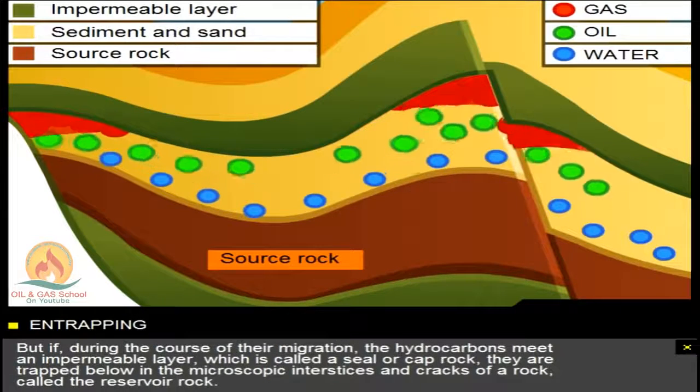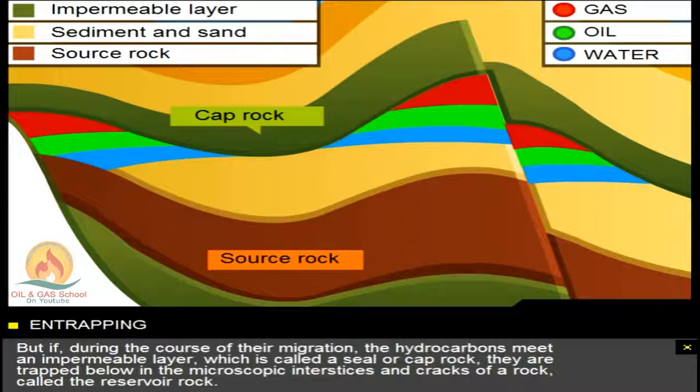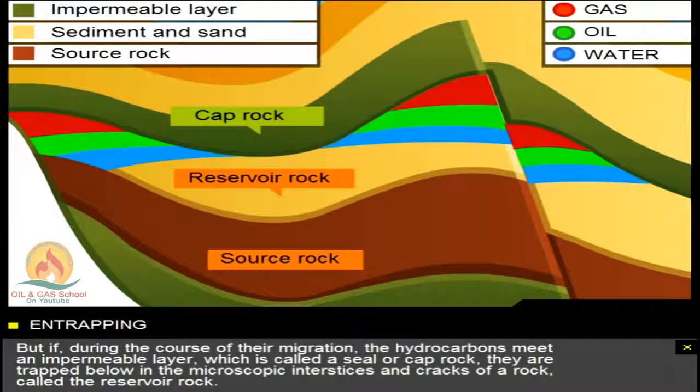But if, during the course of their migration, the hydrocarbons meet an impermeable layer, which is called a seal or cap rock, they are trapped below in the microscopic interstices and cracks of a rock called the reservoir rock.